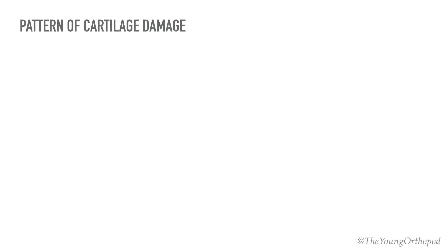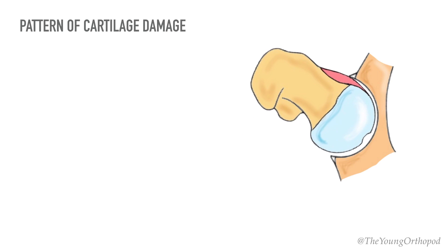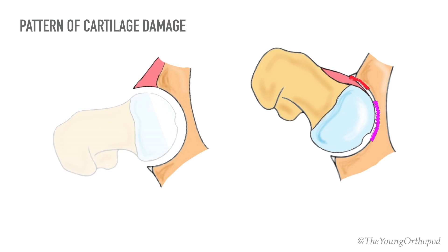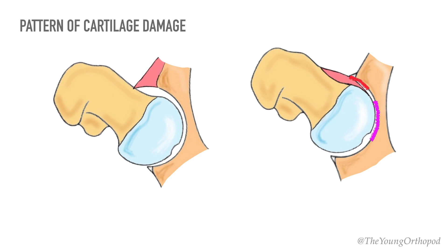The pattern of cartilage damage differs between the two types. In the cam type, the peripheral anterior superior part of the joint is severely involved, and as the disease progresses it also involves the central portion. However, in pincer pathology, the posterior inferior joint cartilage may develop damage rather early, which could represent a counter collision.